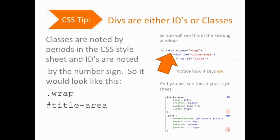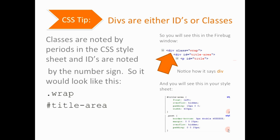CSS divs, or divisions — how we separate different areas of the website — are either called IDs or classes. IDs are something that are used once; classes can be used over and over again. Like the red text example: if you're going to use a lot of red text and want to make that a class, you do that with a period. An ID would be done with the hashtag or number sign. So when you see this in the Firebug window or View Source, you're going to see 'div' and you'll notice whether it's a class or an ID — like 'title area' gets an ID because there's only one on the page.